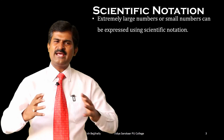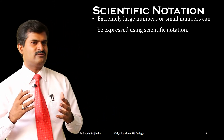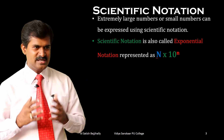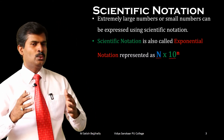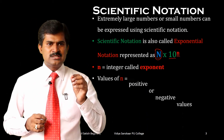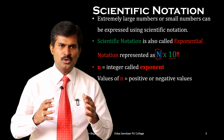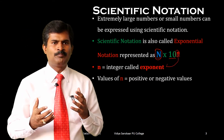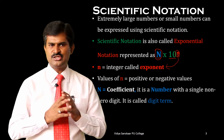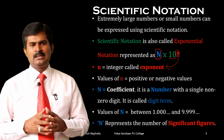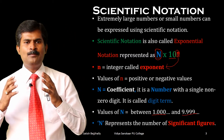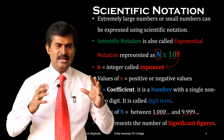Extremely large numbers or extremely small numbers can be expressed using scientific notation. Scientific notation is also called exponential notation, represented as capital N into 10 to the power of small n, where small n is an integer called the exponent. The value of n is either positive or negative. Capital N is the coefficient — a number with a single non-zero digit before the decimal. It is called the digit term, and its value is between 1.00 and 9.999. Capital N represents the number of significant figures.